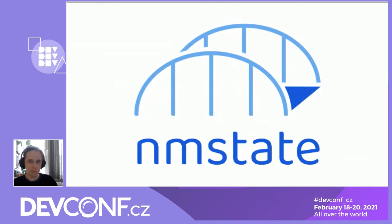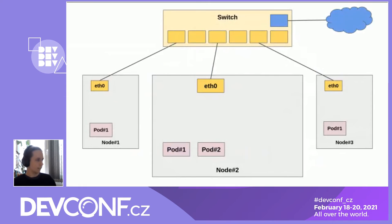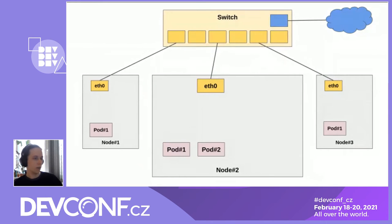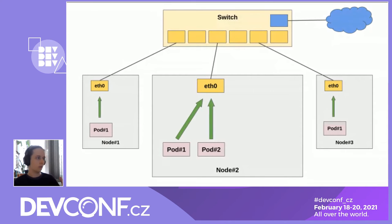Now let's change the topic and talk about network configuration. Here we have three nodes, each with a single network interface connected to a central switch which is then connected to the outside network. Each of these nodes has a handful of pods running, and these pods are communicating over the default interface — and everything looks fine.